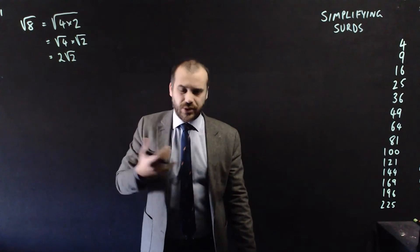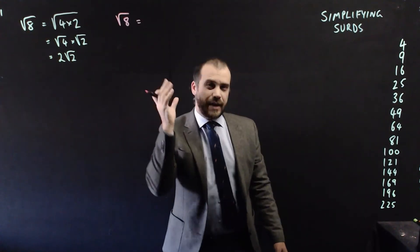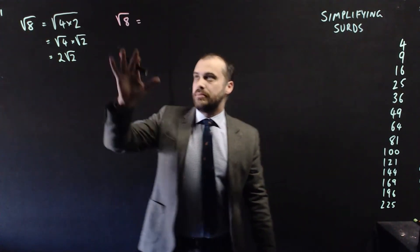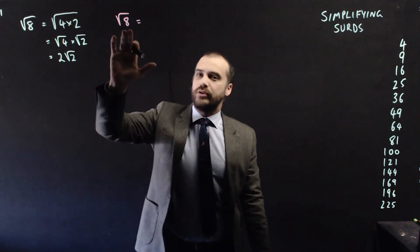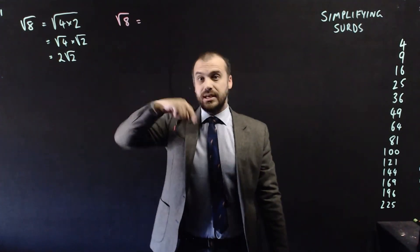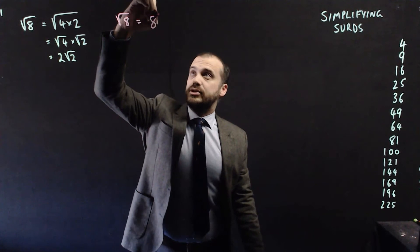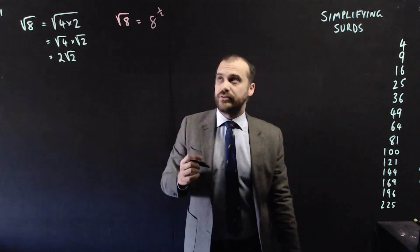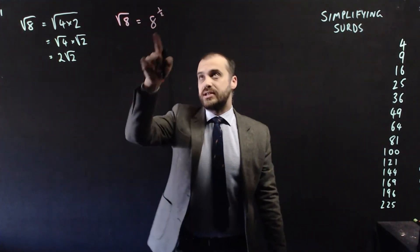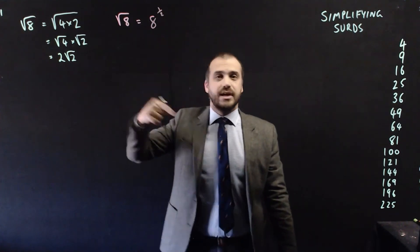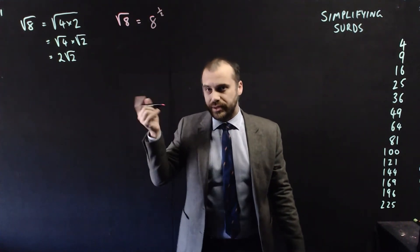Now I said you already knew how to do this. What did I mean by that? It's actually just an application of index laws. Because you should know that the square root of 8 can be rewritten in indices as 8 to the power of 1 half. Now I can start using my index laws to simplify it.